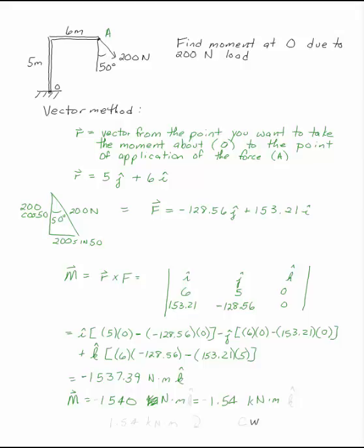Remember, if you're going to give me a force, you've got to give me a direction as well. So in each of these cases, you have M in the negative k direction. You can also say 1.54 kilonewton meters with a clockwise arrow, or you can put in clockwise.